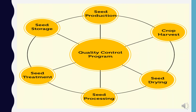To achieve good quality seeds, there should be a quality control program which includes activities under seed production, crop harvest, seed drying, seed processing, seed treatment, and seed storage.